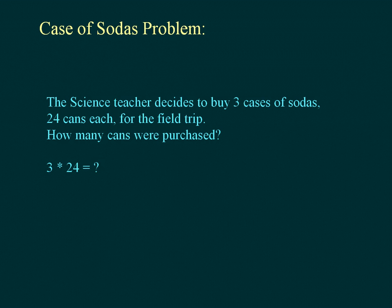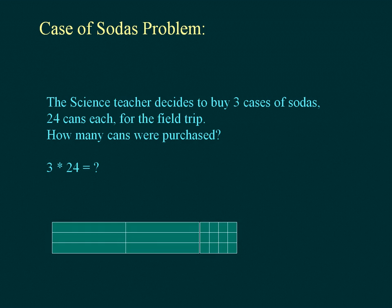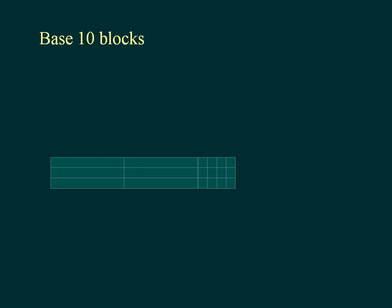3 multiplied by 24 is equal to what? The cases of sodas can be represented by a rectangular array of base 10 blocks. The array represents 4 ones multiplied by 3 ones and 2 tens multiplied by 3 ones. Each of these is part of the product, the result of the multiplication.